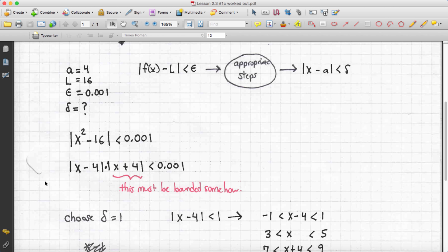In our case, substituting in the appropriate values, we get that the absolute value of x squared minus 16 is less than 0.001. Now we factor, and we get x minus 4 in the absolute value times x plus 4 in the absolute value is less than 0.001.